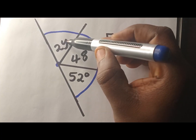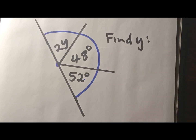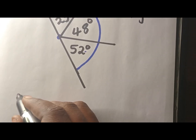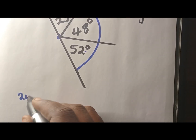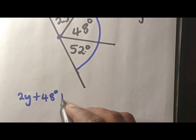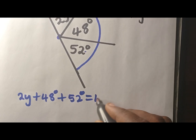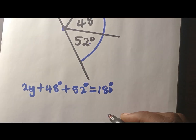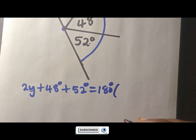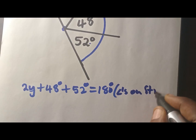When you multiply by 2, add 48, add 52, then you get 180. My job is to add these. So we have 2y plus 48 degrees plus 52 degrees, and I know they're supposed to give me 180. I need to give a reason why this is 180 — it's because these are angles on a straight line.